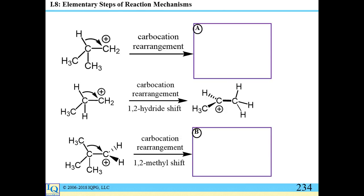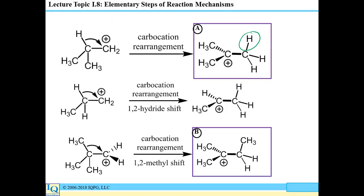Carbocation rearrangement happens as part of a mechanistic pathway when you attain a more stable species by doing so. For example, a primary carbocation could rearrange via a hydride shift — the hydride with its two electrons moves to the adjacent carbon — leaving a positive charge on a carbon that is now tertiary. There are two types: a 1-2 hydride shift, where a hydrogen with its two electrons moves over, and a 1-2 alkyl shift (such as a 1-2 methyl shift) if an alkyl group moves over.